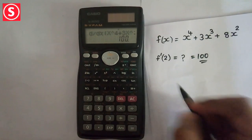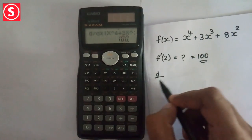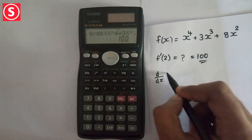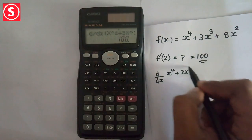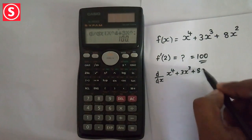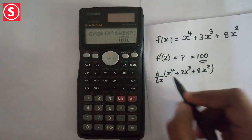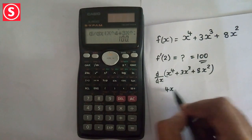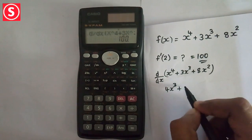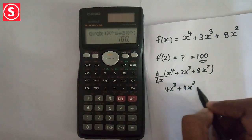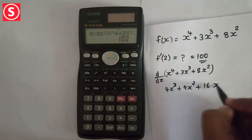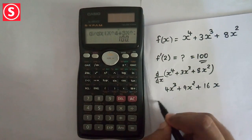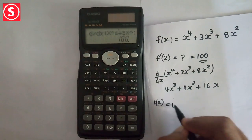We can do this manually. Basically, if we are deriving d/dx of x^4 + 3x^3 + 8x^2, x^4 becomes 4x^3, plus 9x^2, plus 16x, at x = 2.